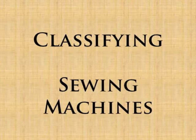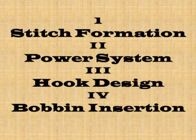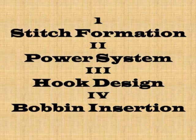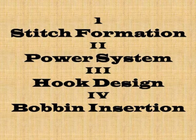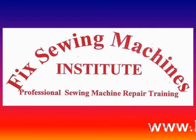When a technician first sees a sewing machine, they should be able to quickly and automatically identify the type of the machine and have an understanding of how to work with that particular type. The common ways to classify sewing machines include the stitch formation, the power system types, the hook design, and the bobbin insertion — and we will look at the other three in later videos. For more information on sewing machine repair, check out FixSewingMachines.com and the Fix Sewing Machines Institute, where you can learn sewing machine repair for fun or profit as a professional sewing machine technician.